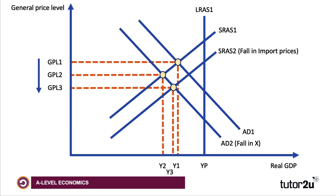Labelling the diagrams this way tells the examiner that you're identifying cause and effect. SRAS2 with 'fall in import prices' in brackets focuses on the link between the currency appreciation and the fall in the imported price index.